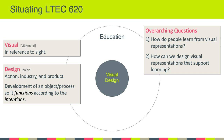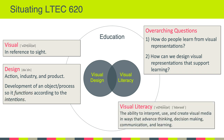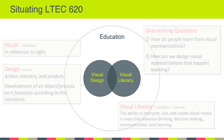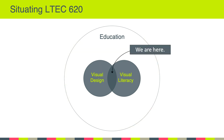In order to adequately address these questions, we're going to need to draw on more than just one field of study. We'll also pull on a related yet distinct field known as visual literacy. Simply put, visual literacy is the ability to interpret, use, and create visual media in ways that advance thinking, decision making, communication, and learning. Those verbs — interpret, use, create — are what we'll be spending most of our time doing this semester. In LTCH 620, we'll be at the intersection of visual design and visual literacy, constantly returning to those overarching questions about the role of visual representations in teaching and learning.